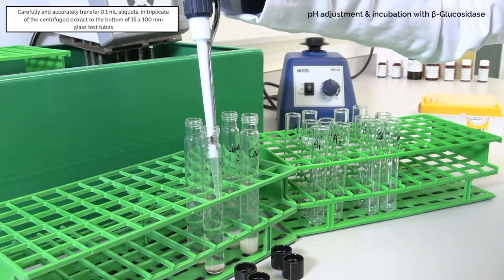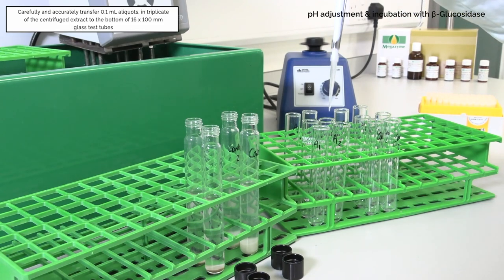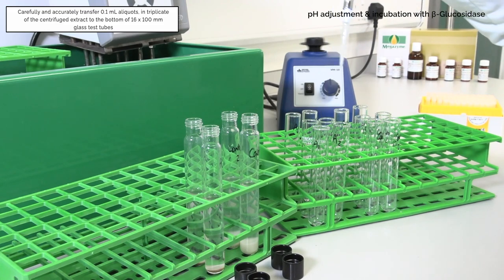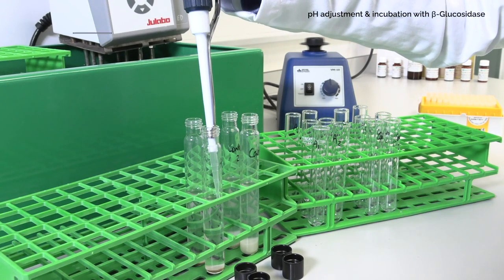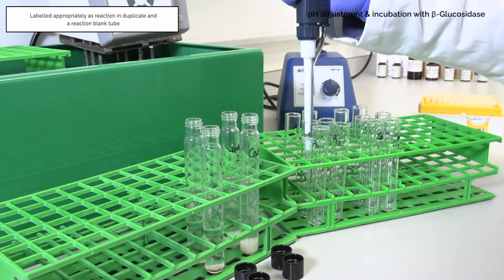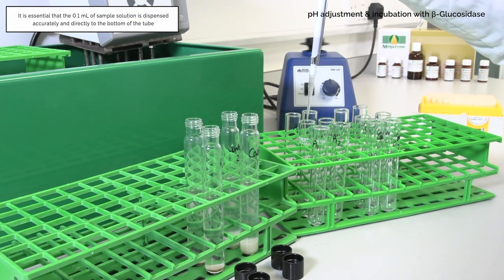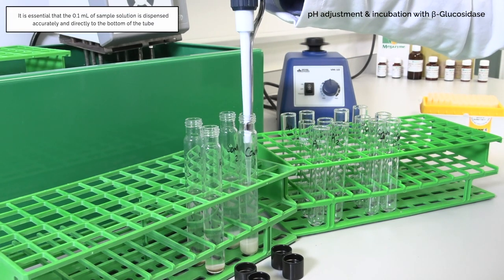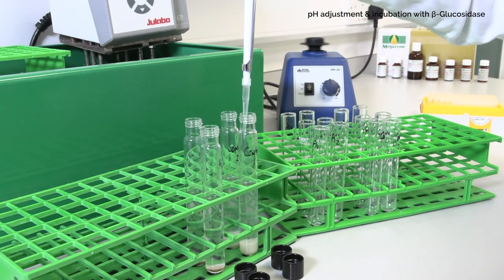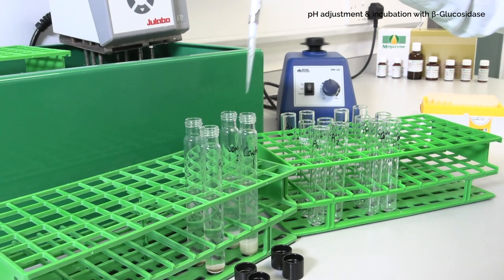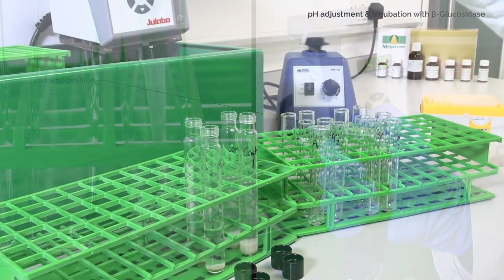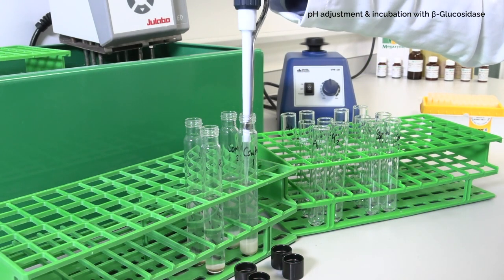Carefully and accurately transfer 0.1 milliliter aliquots in triplicate of the centrifuged extract to the bottom of labeled 16 by 100 millimeter glass test tubes, labeled appropriately as the reaction in duplicate and a reaction blank tube. It is essential that the 0.1 milliliter of sample solution is dispensed accurately and directly to the bottom of the tube. When using positive displacement pipettes, steadily push the dispenser plunger to the first stop position, then push to the second position to ensure all solution is completely dispensed.